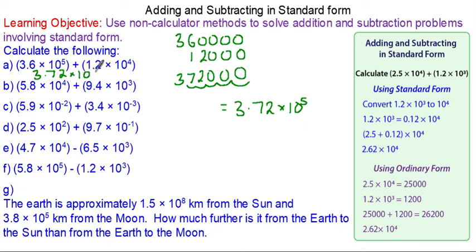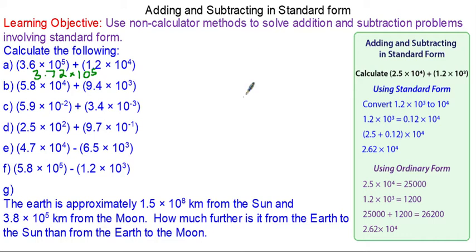For question b, we have 5.8 × 10⁴ which is 58,000, and 9.4 × 10³ which is 9,400. Again, we line them up.